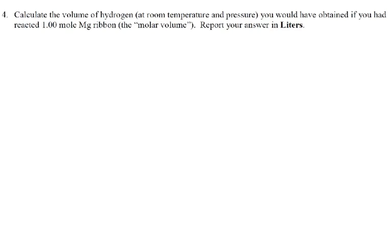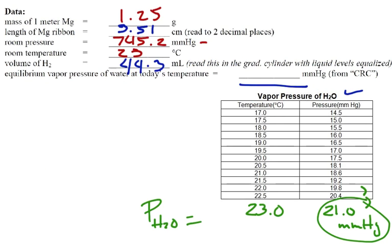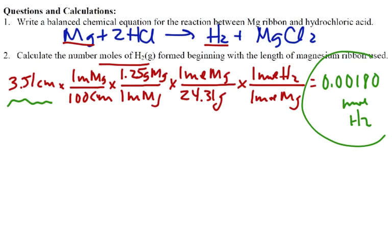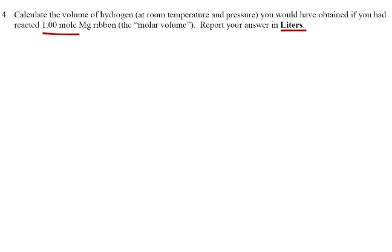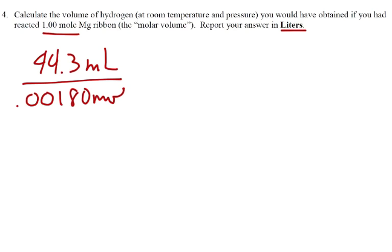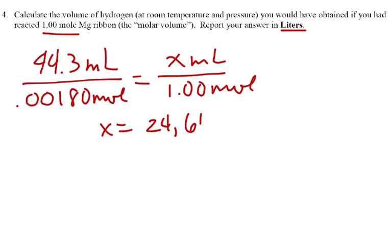Now, calculate the volume of hydrogen that you would have obtained if you had done one mole of magnesium ribbon. And report your answer in liters. So there's two things to do. Going back to our data, we are saying that we had 44.3 milliliters for this volume. So 44.3 milliliters of gas, that was our volume, when we had 0.00180 moles. So we've got that many milliliters for this many moles. How many milliliters would we have if we had done one mole? So mathematically, we're correcting for the fact that we're not doing one whole mole. So let me take a moment and calculate that. For me, I get a value here of 24,611 milliliters. Now, that's too many significant figures, but I can round that off later.